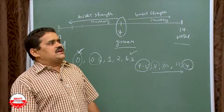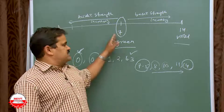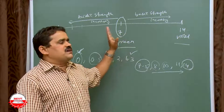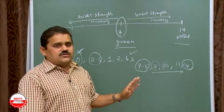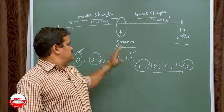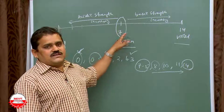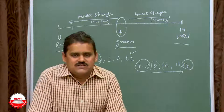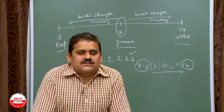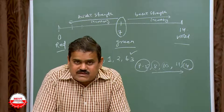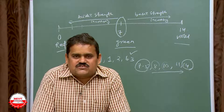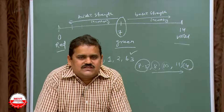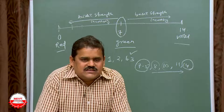Even distilled water, which is very pure, does not have a pH exactly equal to 7 — it is slightly acidic, around 6.5 to 6.8. This is because distilled water may absorb some carbon dioxide or a small amount of H⁺ ions, making it slightly less than pure neutral.